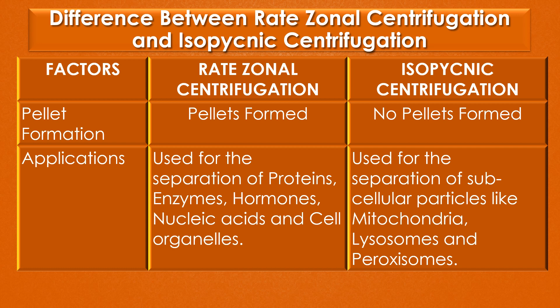Finally, rate zonal centrifugation is used for the separation of proteins, enzymes, hormones, nucleic acids, and cell organelles. Isopycnic centrifugation is used for the separation of subcellular particles like mitochondria, lysosomes, and peroxisomes.